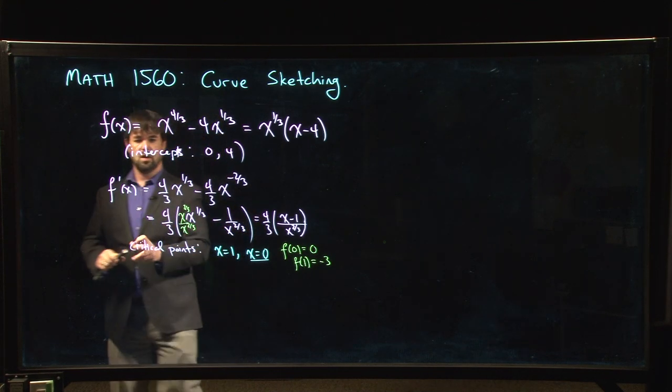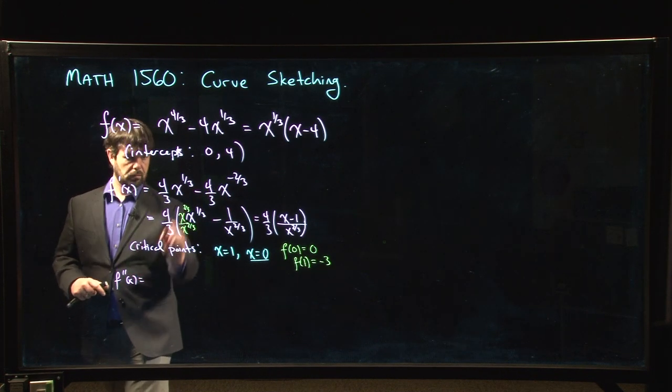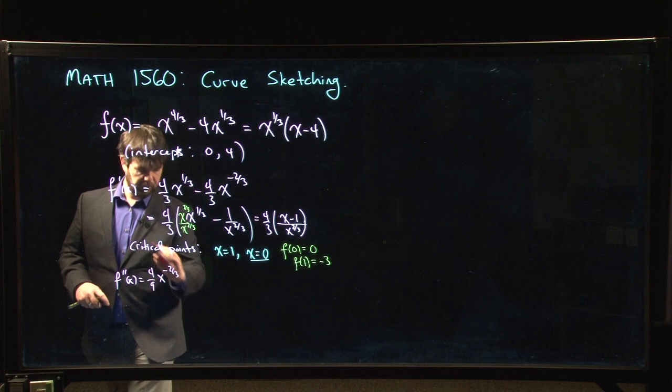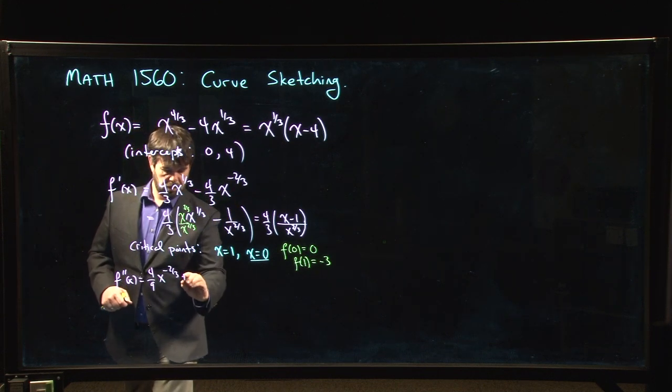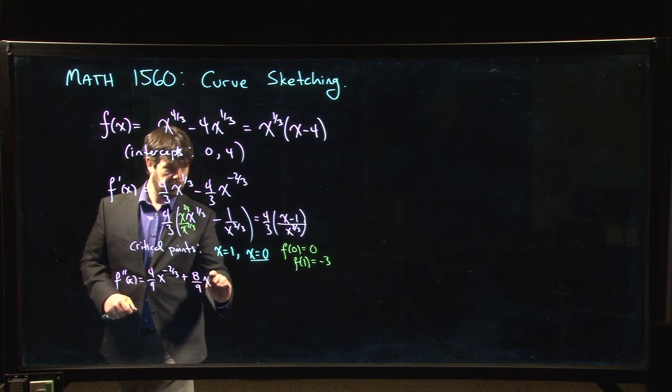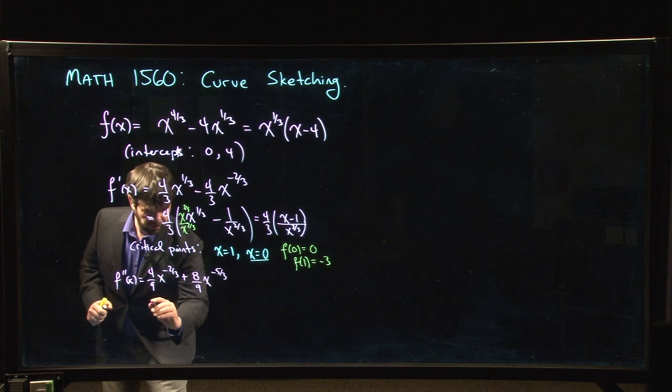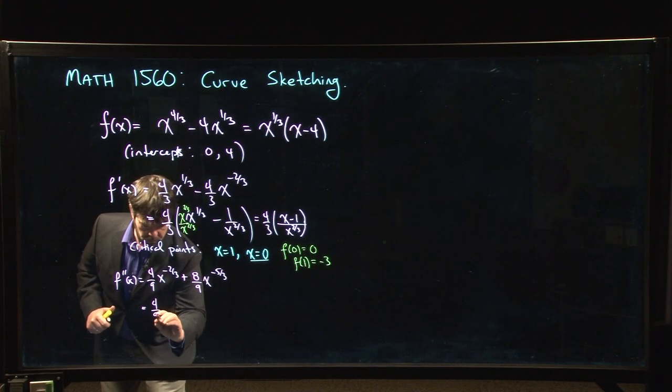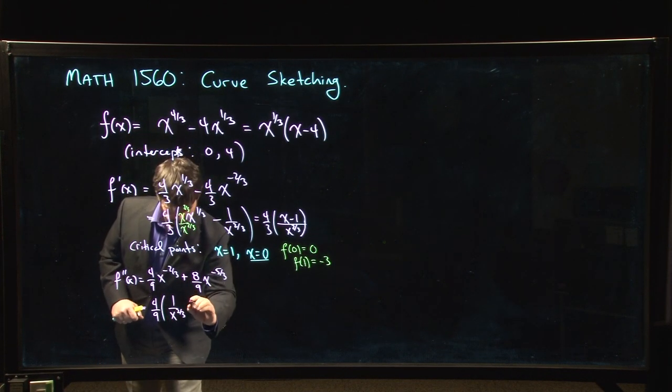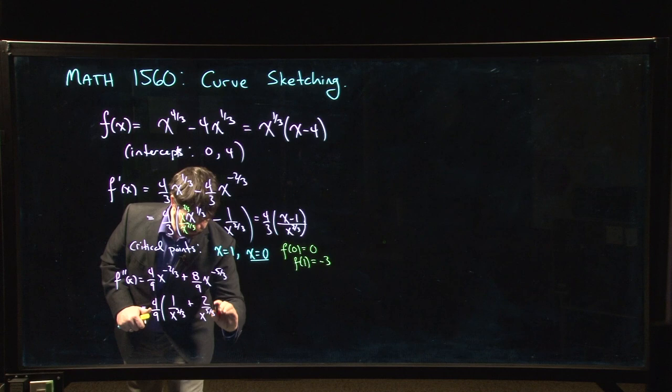Okay, now's the hard work. Second derivative. We come back up to here to do the second derivative because it's a little bit easier. 1 third comes down, so that's 4 over 9 x to the minus 2 thirds minus, minus becomes plus 8 over 9 x to the minus 5 over 3.